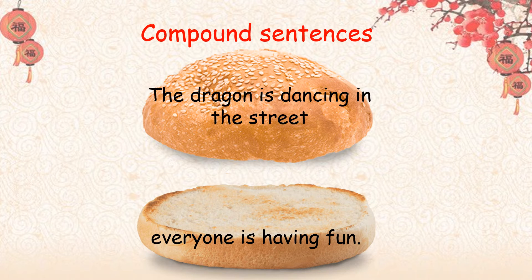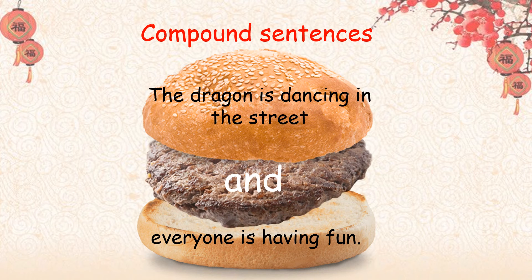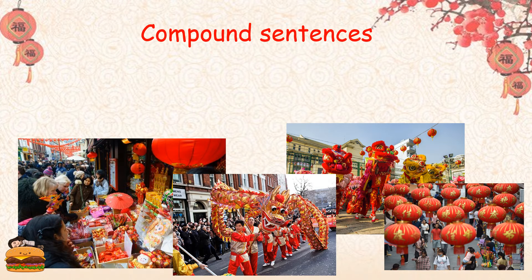Now, to make it a compound sentence, I need to add my burger. To make it a burger, I need to add my patty, and the patty is going to have an 'and' on it. We pop it all together and it makes a perfect compound sentence, or a perfect burger: the dragon is dancing in the street, and everyone is having fun. I'm going to have a go at writing my own now, about my beautiful Chinese New Year pictures — and I know you've been learning lots about Chinese New Year, so you're going to have some brilliant ideas.